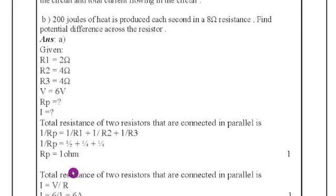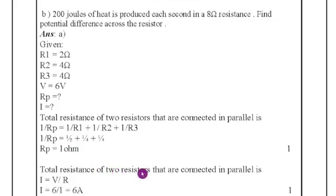Then you have to find out total resistance of two resistors that are conducted in parallel I is equal to V by R therefore V is equal to 6 divided by 1 so 6 ohm therefore the first question answer is 6 ohm 6 amps and 1 ohm.